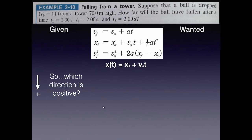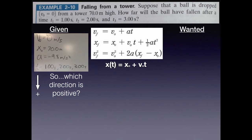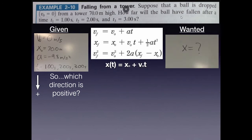Since we're dropping something from a height of 70 meters and it's falling the entire time, I'm going to create a positive direction that makes most of my variables positive, because working with positive values is easier. So I'm going to make positive downward, drawing this arrow downward with a plus sign. Now, looking at what we're given: the initial velocity is zero (it's dropped), we're given the initial position, the final position is not yet clear, we have several different times, and we know the acceleration is 9.8 m/s².